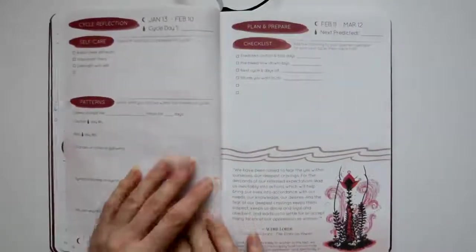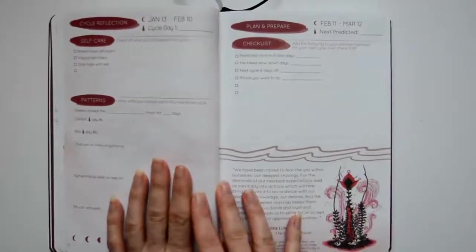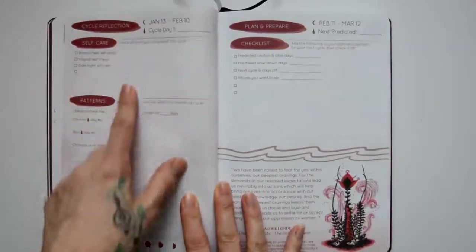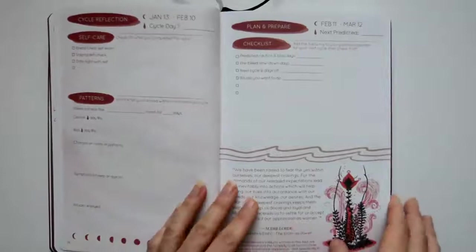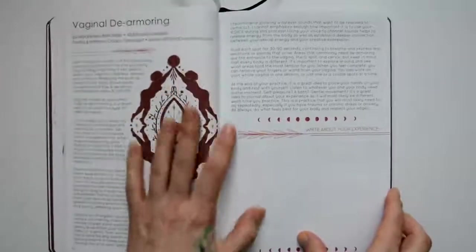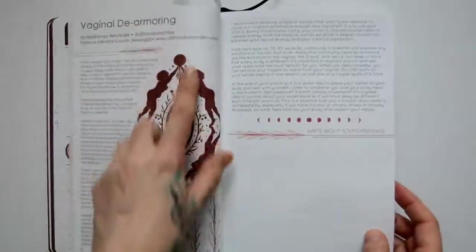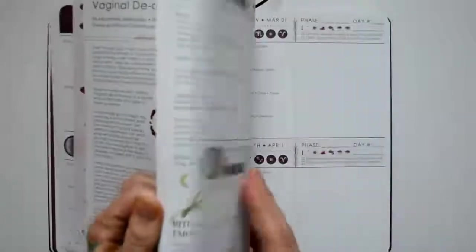And then you'll come across some stuff like this where there's quotes and information and cycle reflection at the end of each cycle. And then every so often you'll come across a page that has just more information. I don't know what vaginal dearmoring is. I didn't get to this page yet, but that'll be interesting.